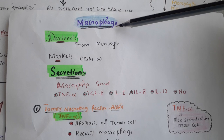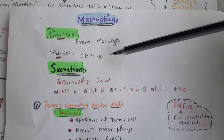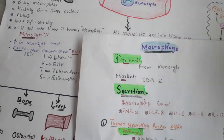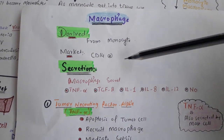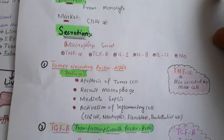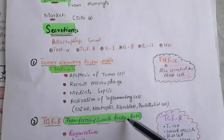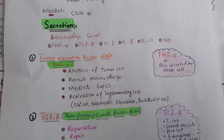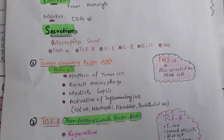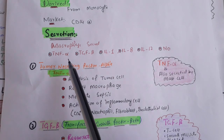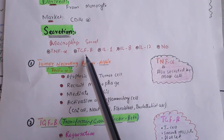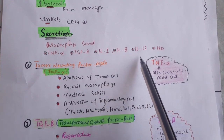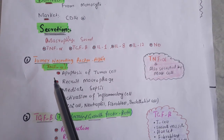Macrophage is derived from monocytes, and since the CD marker for monocyte is CD14, macrophage is also CD14 positive. The secretions of macrophage include tumor necrotic factor alpha (TNF-α), transforming growth factor beta (TGF-β), interleukin 1, interleukin 8, interleukin 12, and nitric oxide.